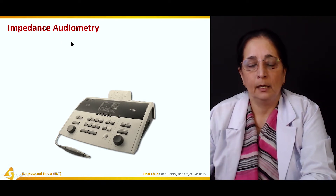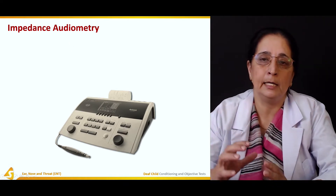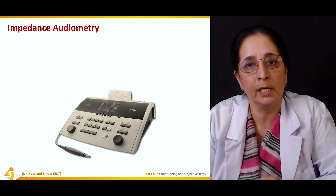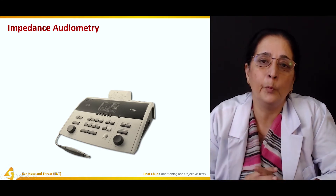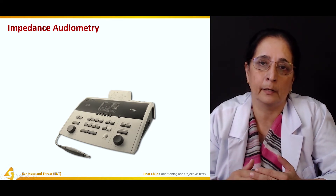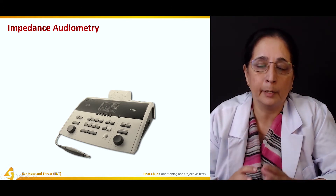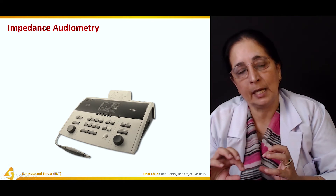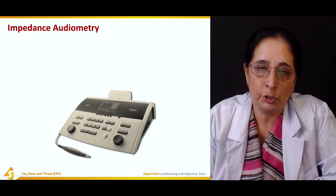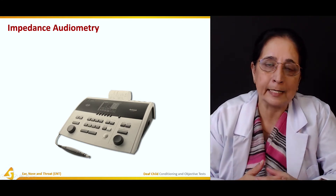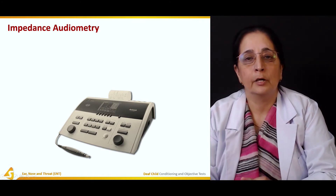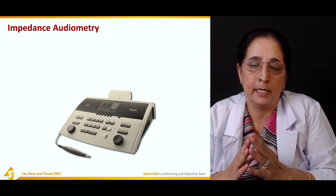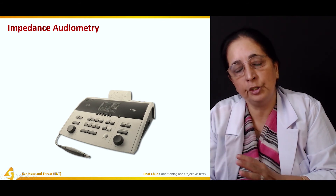Impedance audiometry, also known as tympanometry, is mainly performed to find out the efficiency of the middle ear. A probe is inserted with three components: an oscillator, an air pressure pump, and a microphone. The oscillator produces the sound, while the pressure pump inserts air into the ear. The waves reflected by the tympanic membrane are recorded, giving us a graph where the maximum is at zero — when the pressure in the middle ear and atmosphere are equal.